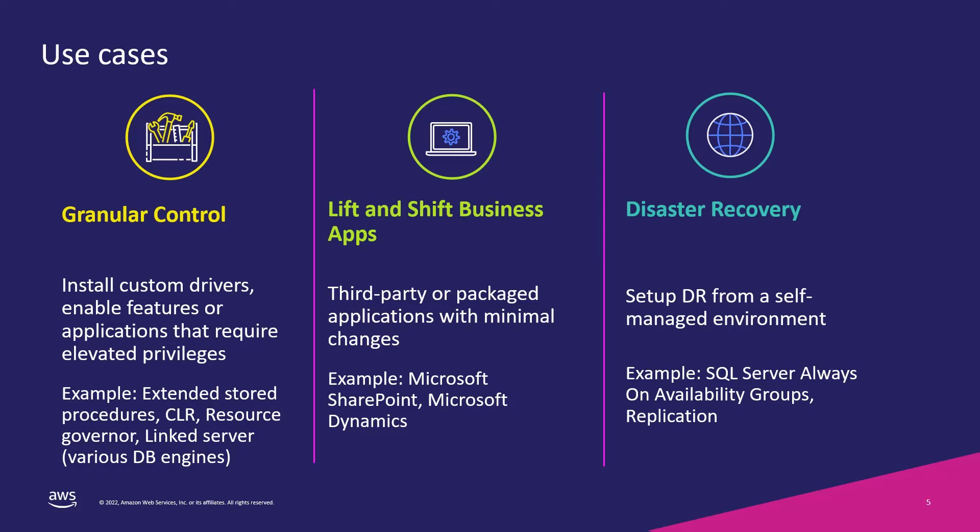Some business applications like Microsoft SharePoint and Microsoft Dynamics require elevated access, and in some cases these applications require libraries to be installed at the OS level on the database instance. Another use case is disaster recovery, when you need to customize your DR solution to meet specific business requirements. For example, if your primary SQL Server is running on-premises and you'd like to set up DR on AWS using RDS Custom, you can simply extend your existing availability group from on-premises to RDS Custom.